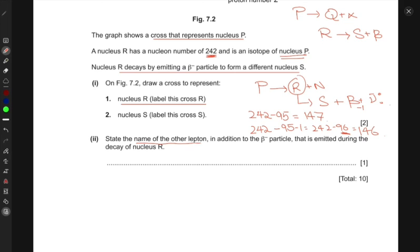They ask to state the name of the other lepton in addition to the beta particle that is emitted during the decay of nucleus R. As I mentioned, it would be an anti-neutrino.